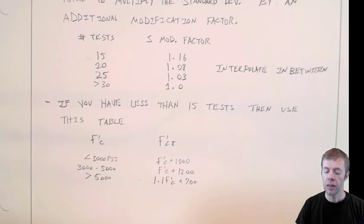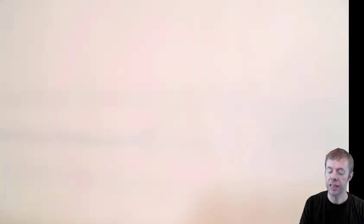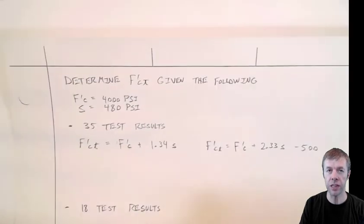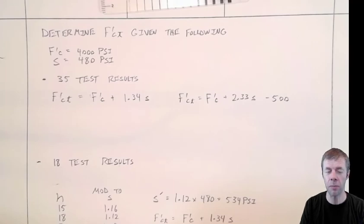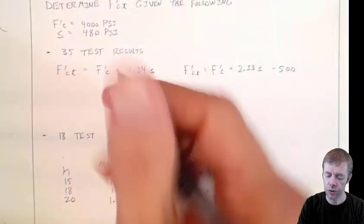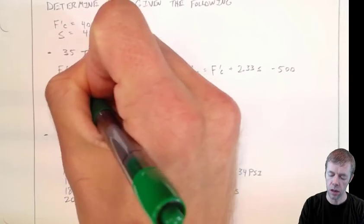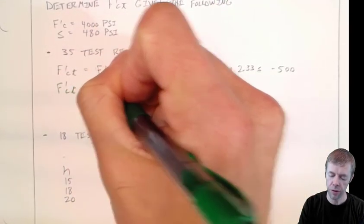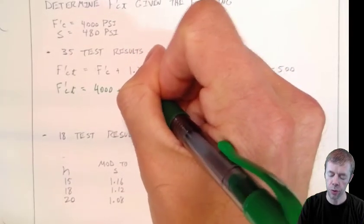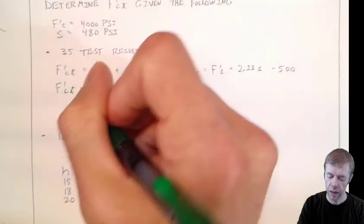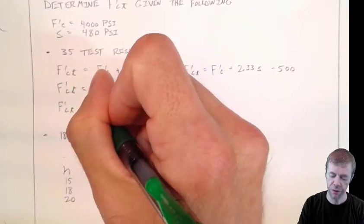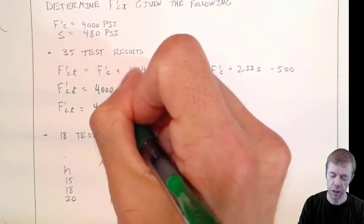Okay, let's work an example problem now. I want you to define the target strength given the following: 4,000 psi and my standard deviation is 480 psi. If I have 35 test results, that means I don't have to make any modifications. I get to just use these two equations. F'C is equal to 4,000 psi plus 1.34 times my standard deviation of 480.